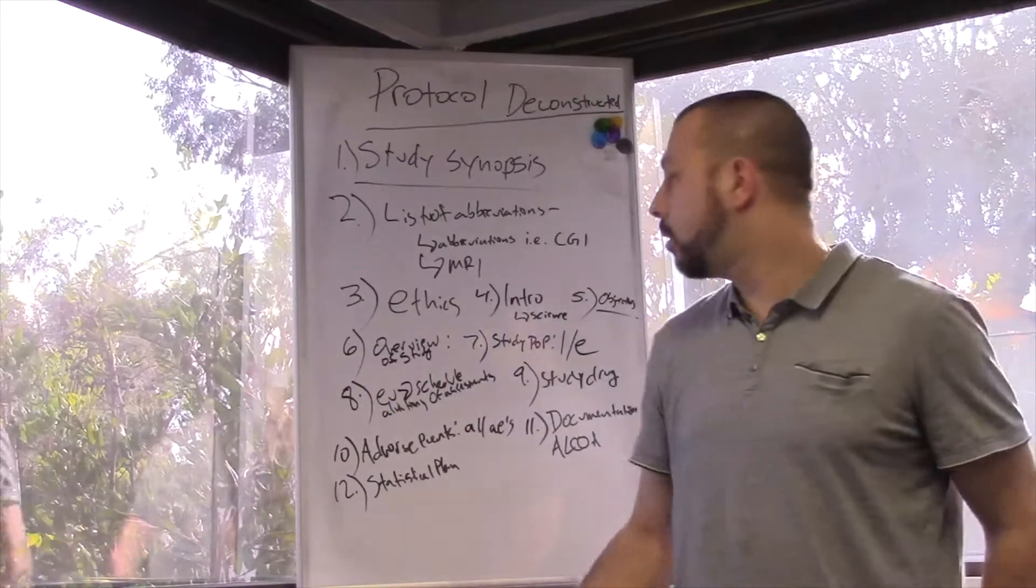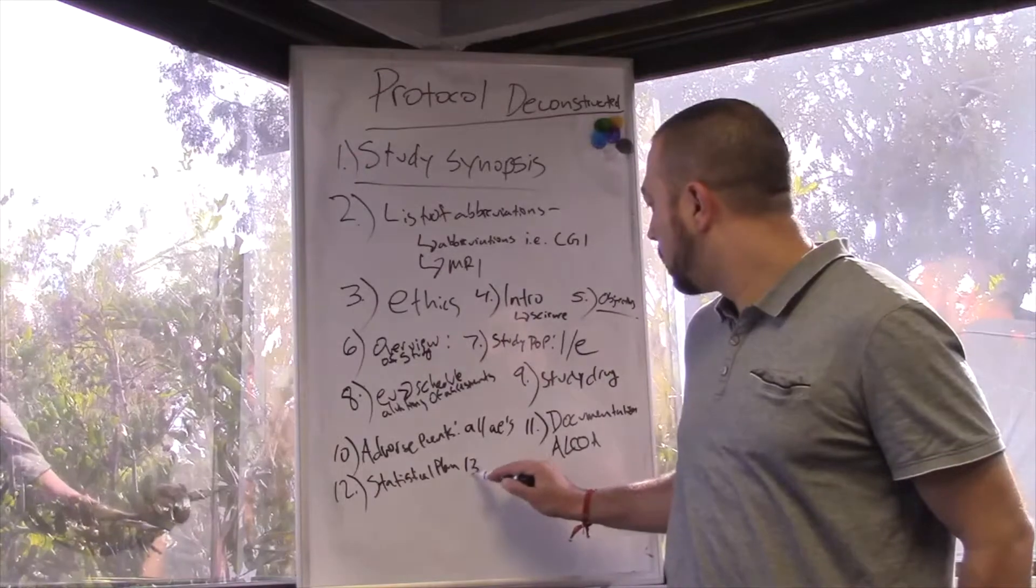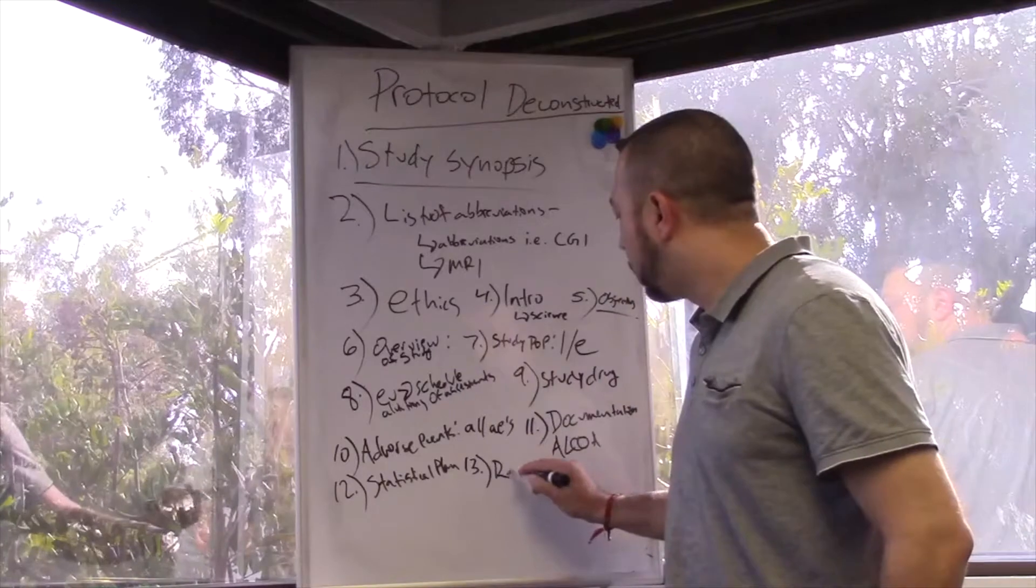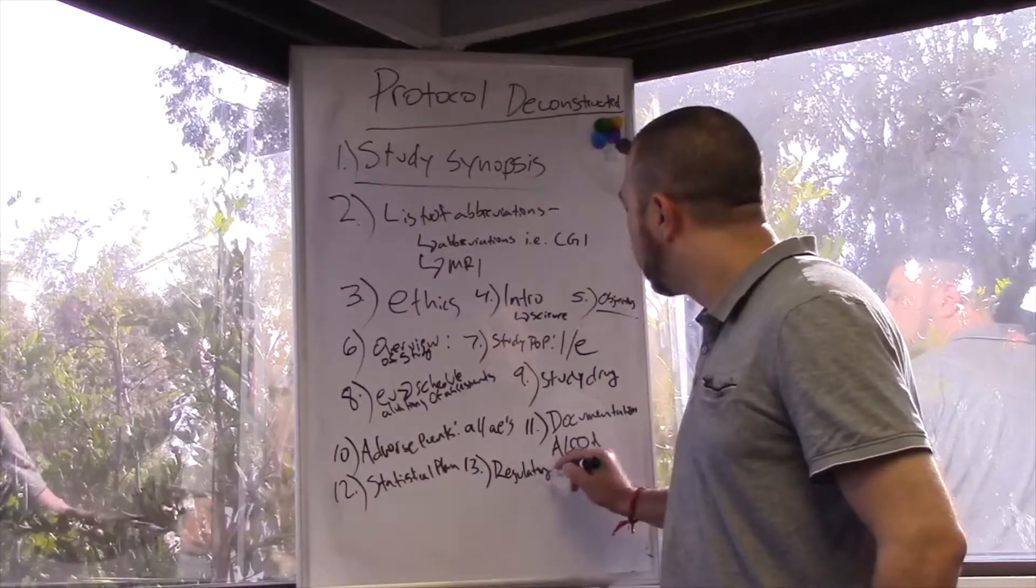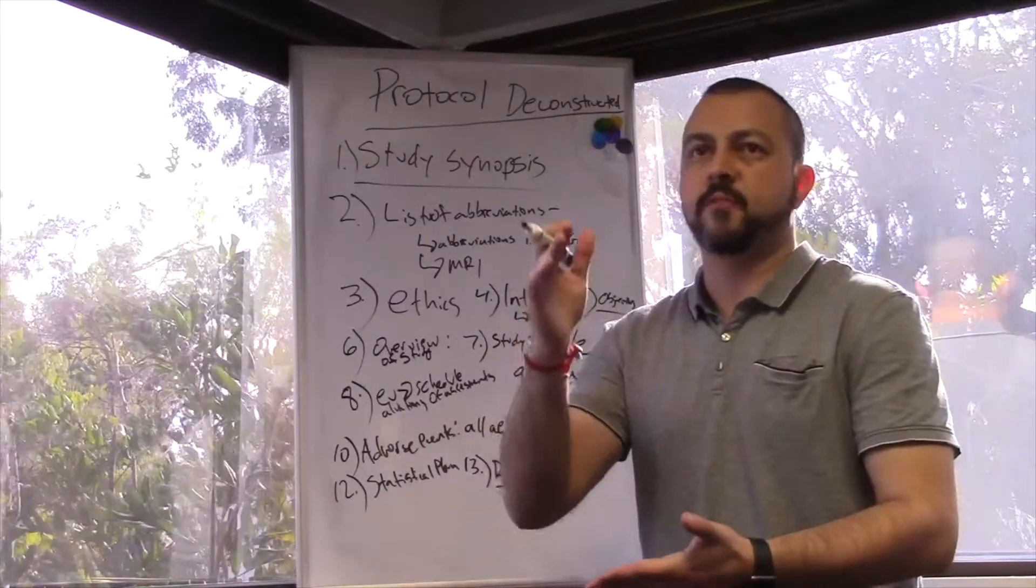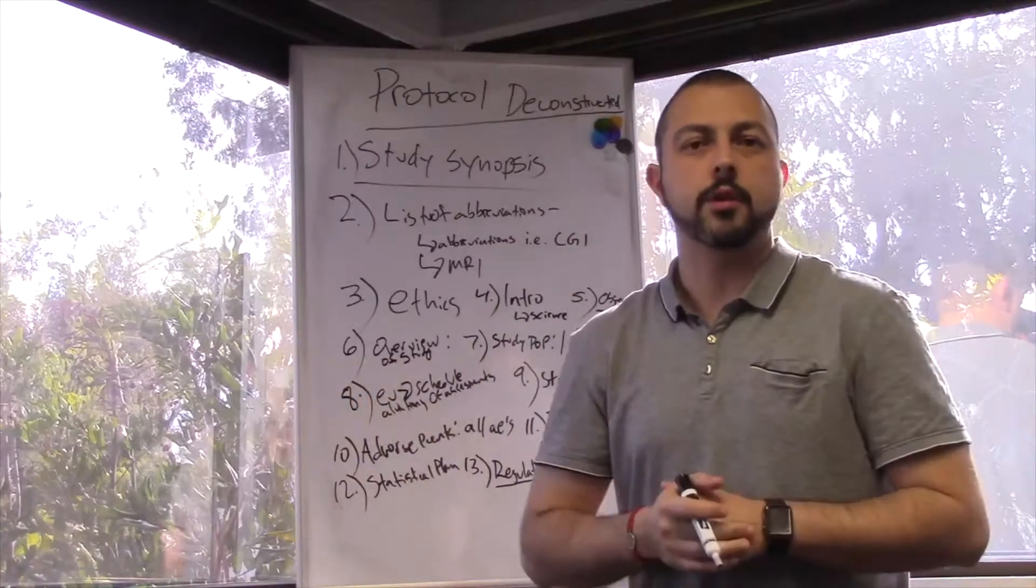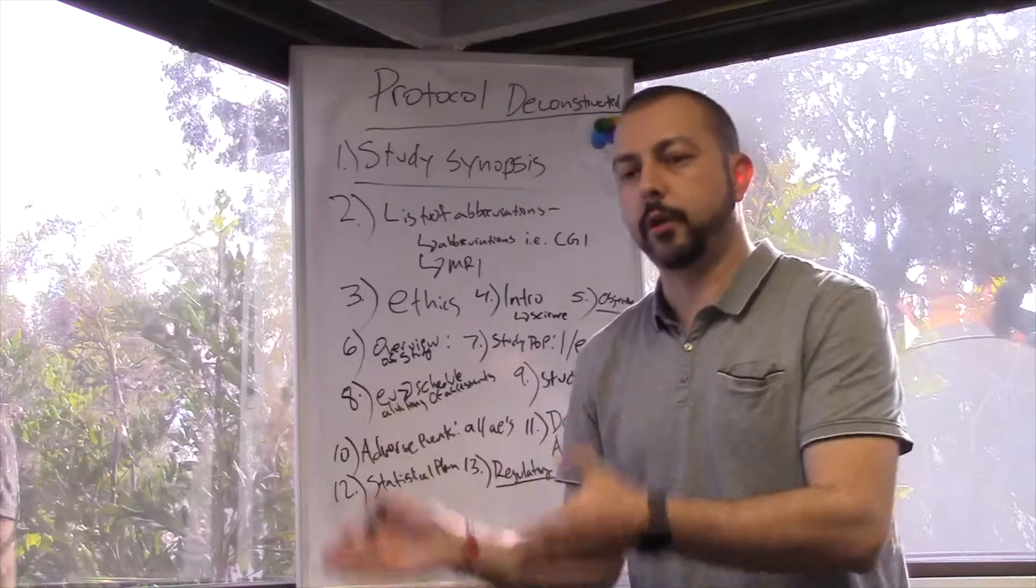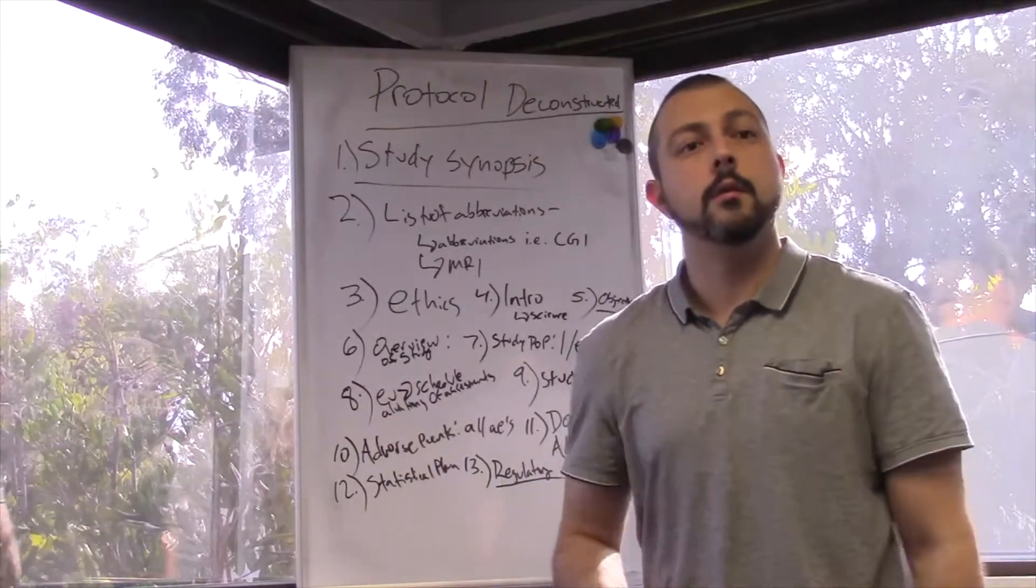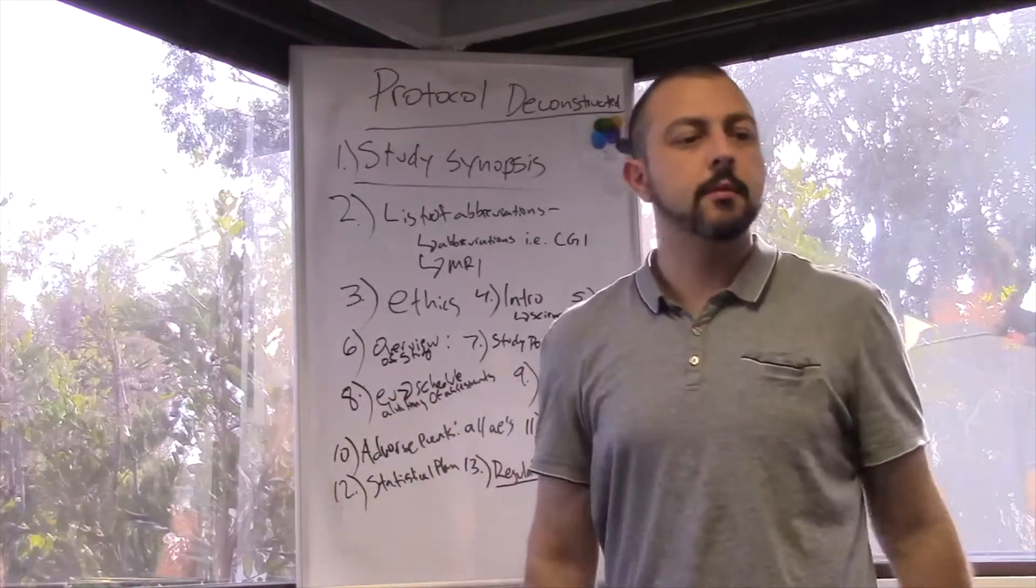Next, this is actually kind of a long section. Number 13, regulatory and ethical issues. Regulatory is pretty easy. I don't know what regulatory means exactly. Straightforward: 1572, financial disclosure forms, IRB questionnaires. Ethical issues, they probably say something about following Good Clinical Practice and following your IRB guidelines. Yeah, exactly. It discusses that IRB will be notified of everything. Exactly what I said. We'll receive approval from IRB for everything.